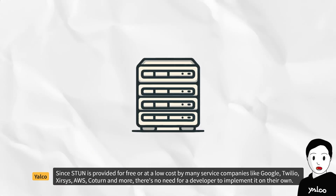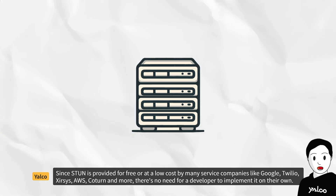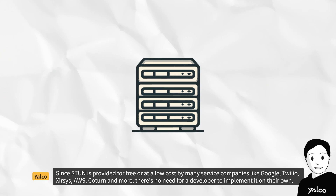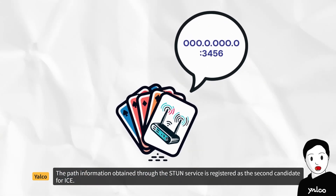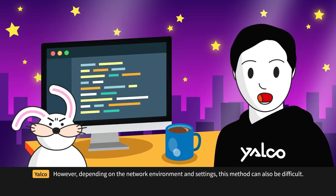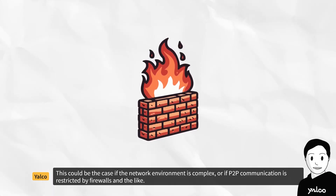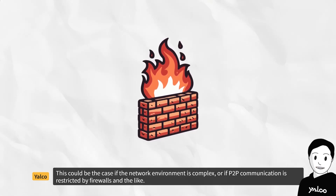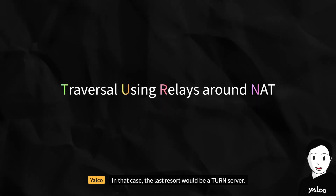Since STUN is provided for free or at low cost by many service companies like Google, Twilio, AWS, and more, there's no need for a developer to implement it on their own. The path information obtained through the STUN service is registered as the second ICE candidate. However, depending on the network environment and settings, this method can also be difficult — for example, if the network environment is complex or if P2P communication is restricted by firewalls. In that case, the last resort would be a TURN server, where clients communicate through this server kept in between them.